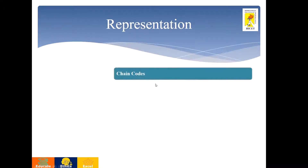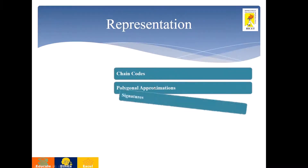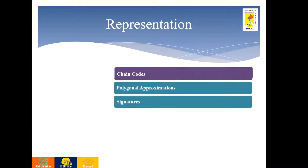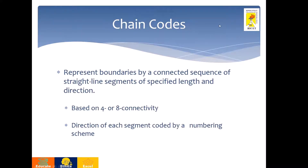Under representation, you have chain code, polygonal approximation, and signature. First, we will see chain code. Chain code represents the boundary by means of a connected sequence of straight line segments. This connected sequence can be numbered based on 4-connectivity or 8-connectivity, and the numbers are provided based on the direction of each segment.